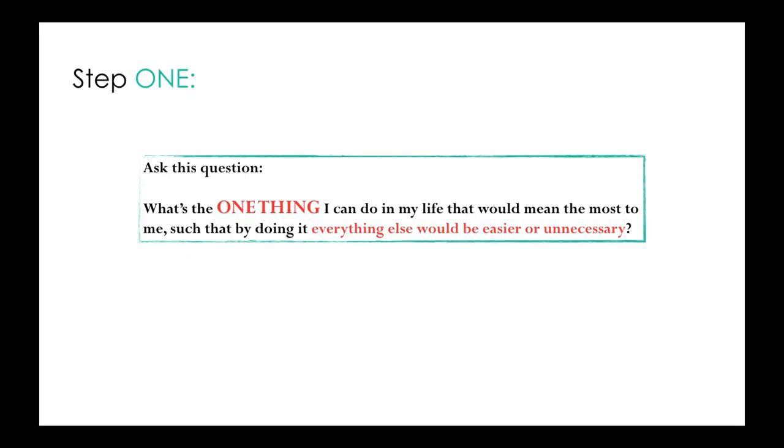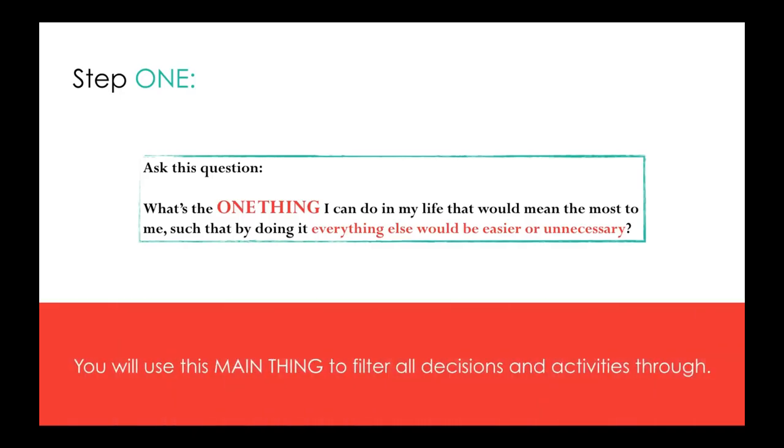This is from the book called The One Thing by Gary Keller, the founder of Keller Williams Realty. This question literally defined 2016 for me when I knew that I wanted to create a phenomenal course. I wanted to do it within a year. And so I literally filtered every decision, every activity through this question. And basically the question was, how can I use my main thing of getting that course ready so that anything else that does not add to that goal is unnecessary or there are things that would make it easier to do? You use this main thing, like I said, to filter all decisions and activities through.